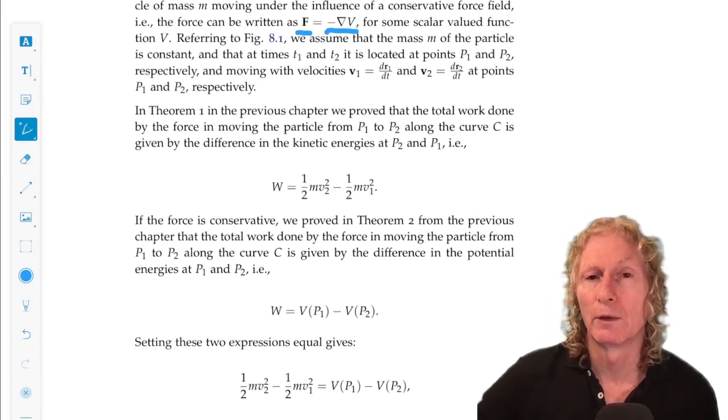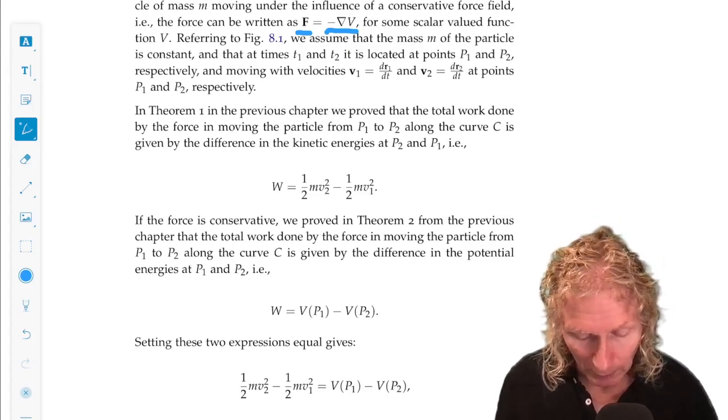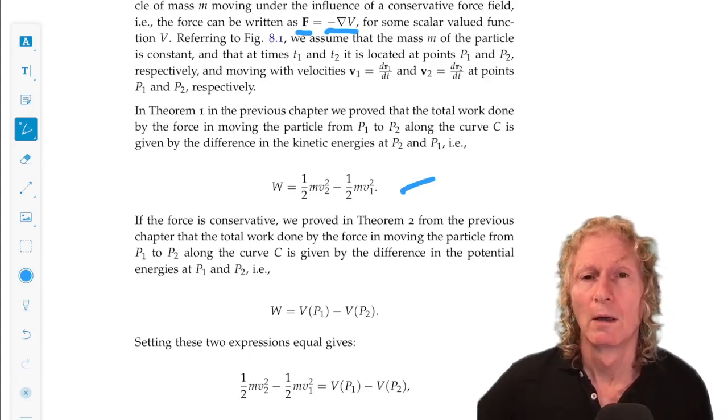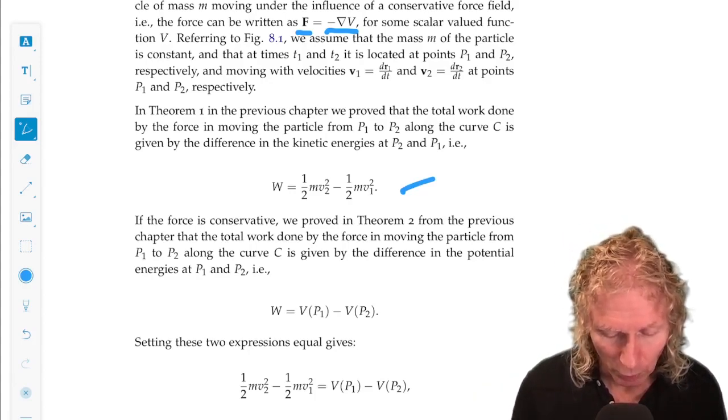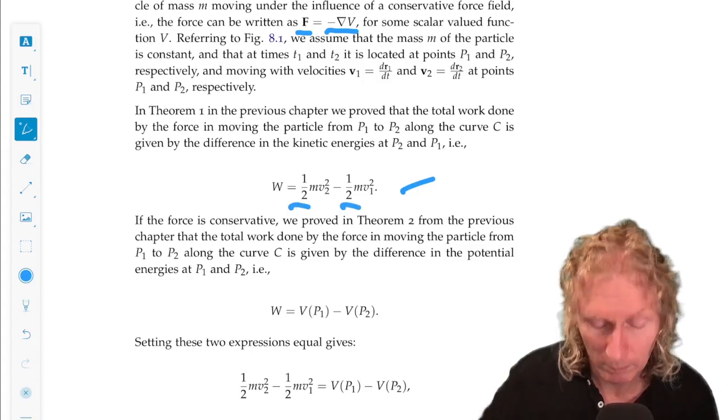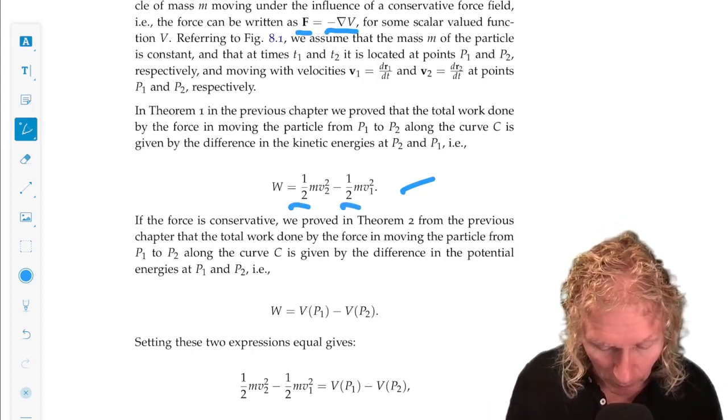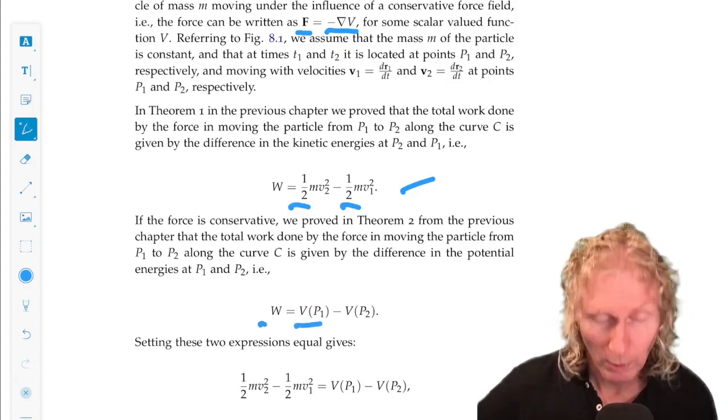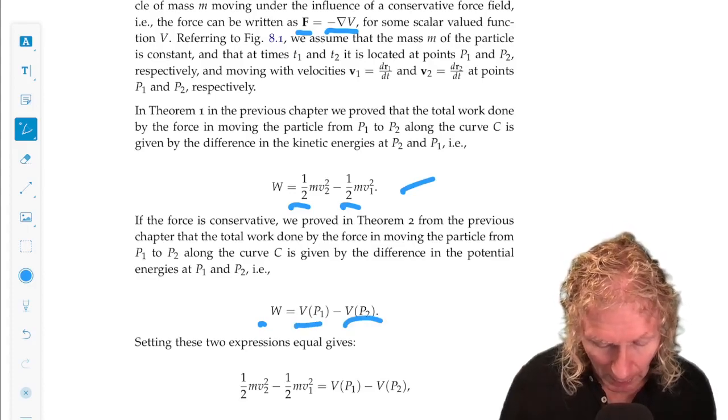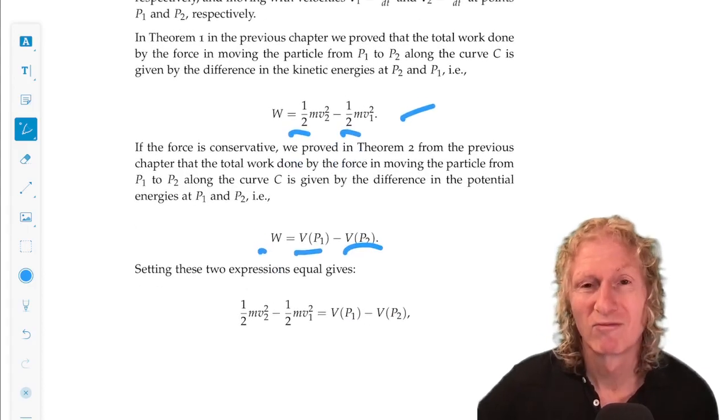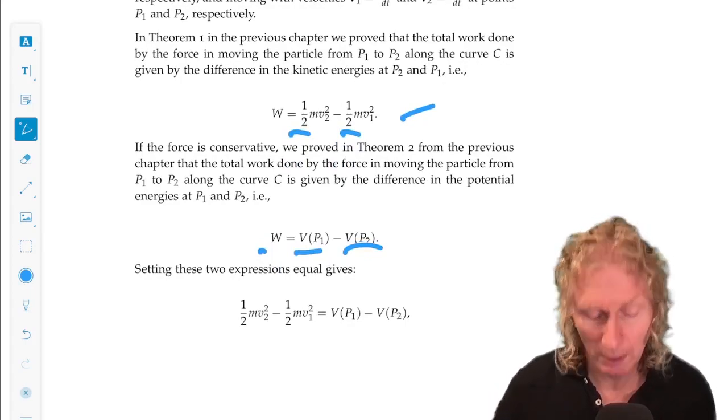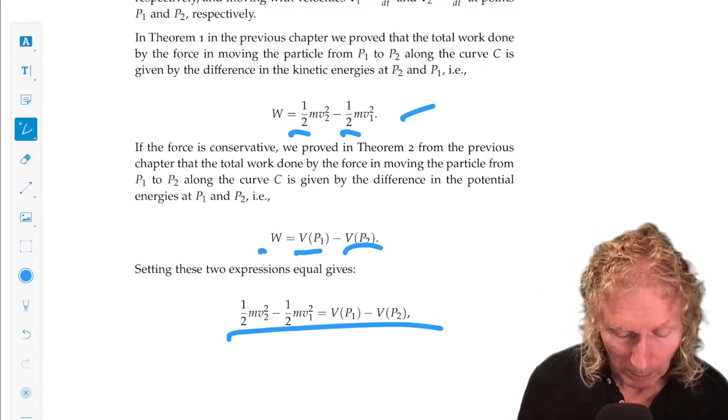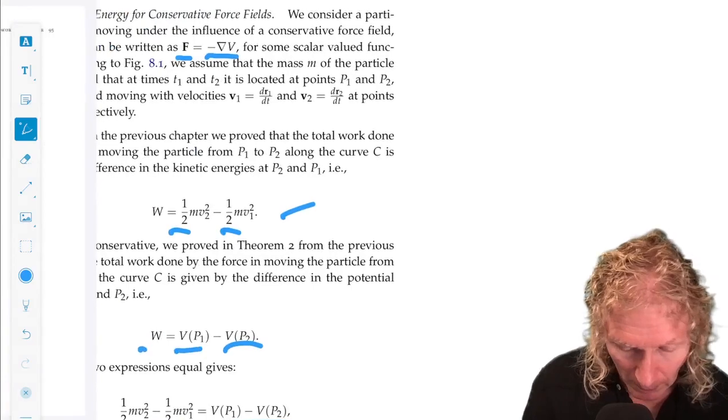So for a conservative force, we've seen that there are two expressions. One is the difference in kinetic energy at P2, where you're going, minus where you started, P1. Also, the work is the potential energy where you start, minus where you go. And these expressions have to be equal.